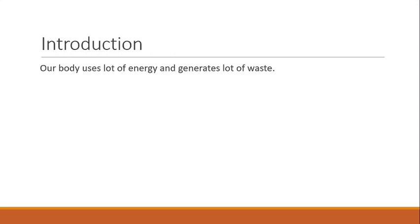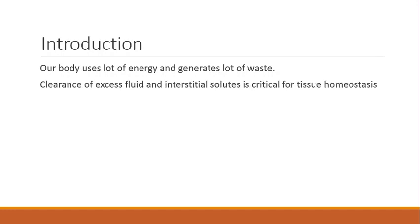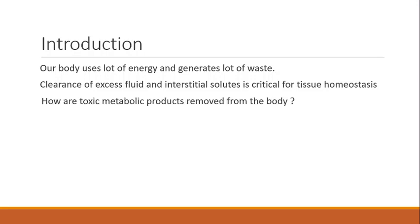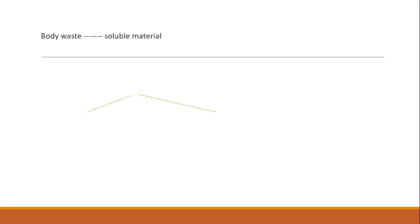We know that our body uses a lot of energy and generates a lot of waste. Clearance of excess fluid and interstitial solutes is critical for tissue homeostasis. How are these toxic metabolic products removed from the body? What happens to them in the periphery, and what happens to them in the CNS?